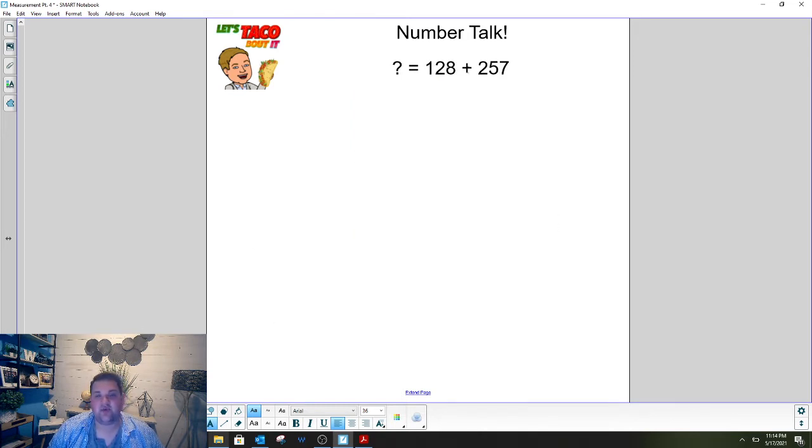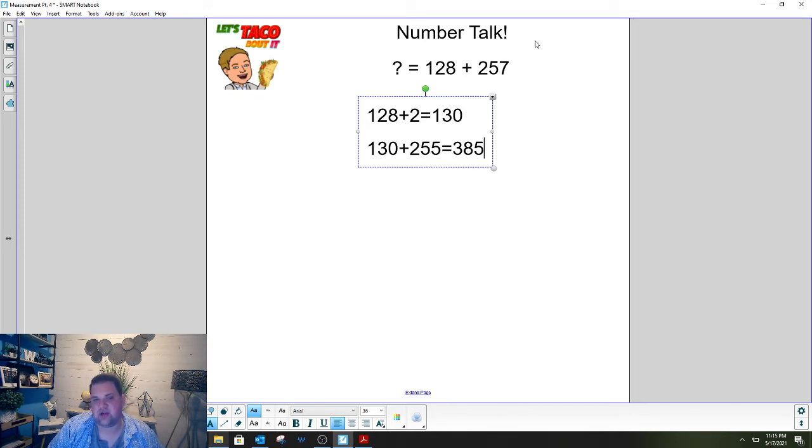Now I want to know what the sum of 128 and 257 is. Enter what you think it is into PlayPosit along with your thinking. All right here's how I solved it. I took 2 from 257 and added it to 128 and that gave me 130. Then I took 130 and added on 255 because I took 2 to give to 128 and that gives me an answer of 385. So that's another way that you can solve by making a friendly number. Awesome thinking and number talk.